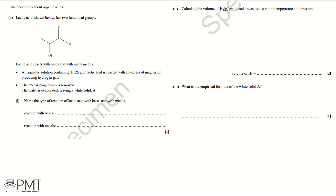Part one: name the type of reaction of lactic acid with bases and with metals. The type of reaction with lactic acid and bases is known as neutralization — write this on the answer line provided. The type of reaction with lactic acid and metals is known as a redox reaction. To get the mark for this question you must have both reaction types correct.